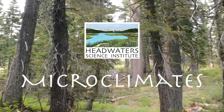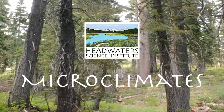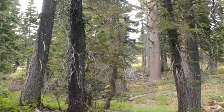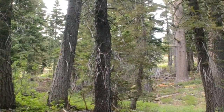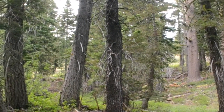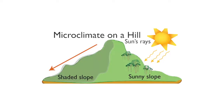Today, let's talk about microclimates. A microclimate is a local set of atmospheric conditions that differ from those of the surrounding area. This could be caused by differences in the amount of heat or water received. A microclimate can be as small as a few square feet, or as large as square miles.